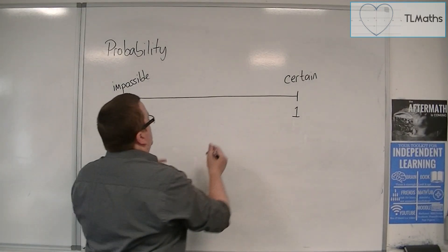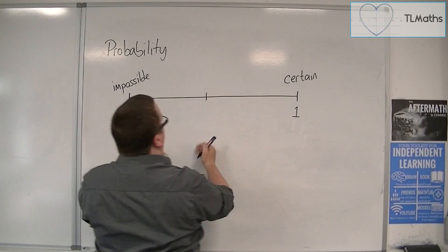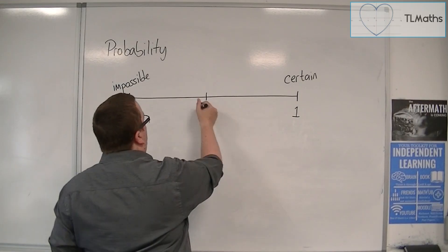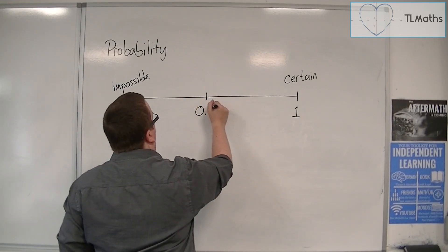In the middle, halfway between 0 and 1 is 0.5, or one-half.